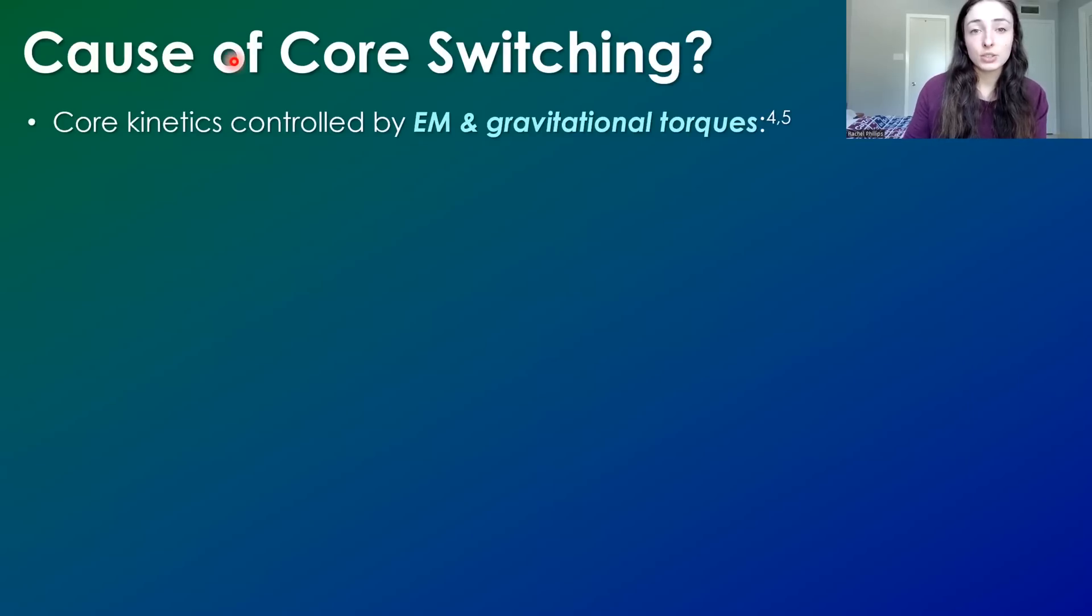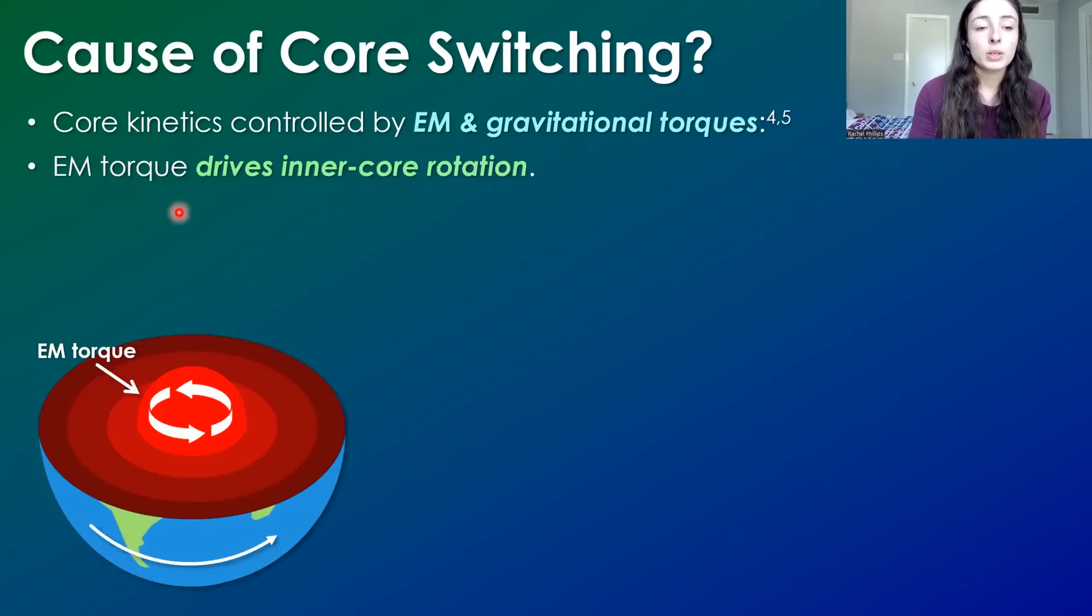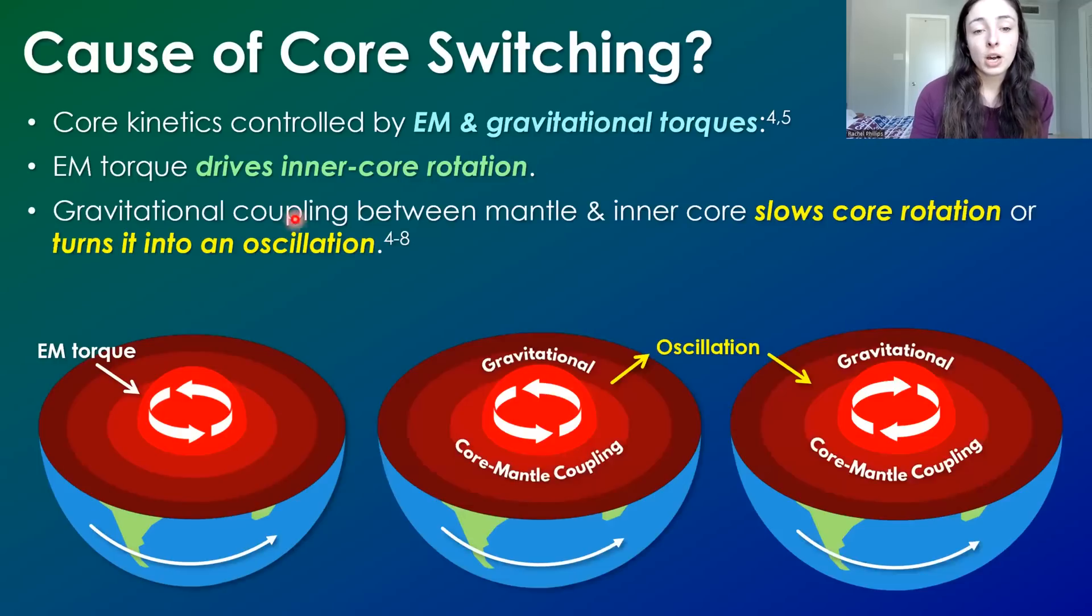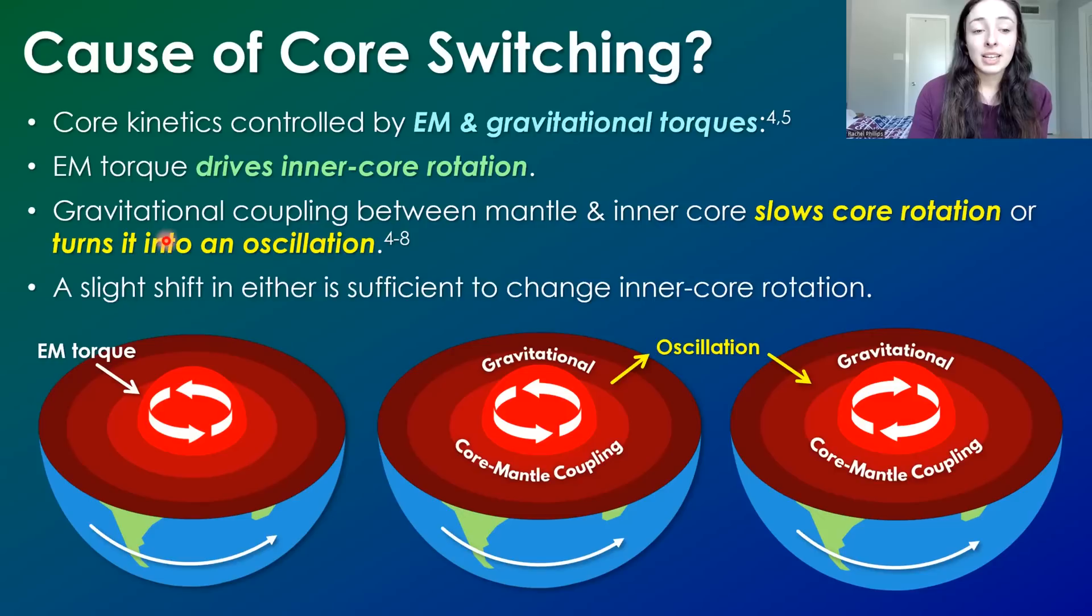Now what's the cause behind this core switching direction thing? Well core kinetics is controlled by EM, electromagnetic, and gravitational torque. Electromagnetic torque is what drives inner core rotation and gravitational coupling between the mantle and inner core slows the core rotation and turns it into an oscillation. This is why we have these oscillatory cycles. A slight shift in either is sufficient to change the inner core rotation. So in layman's terms and in my understanding, this whole explanation of the cause of the core switching is still up for interpretation of whether it is on a kind of cyclic pattern that happens every certain amount of decades or whether there's certain external forces and external factors that might kick off certain switches and changes in these torques that then causes inner core rotation change.